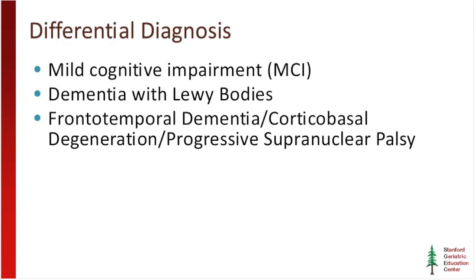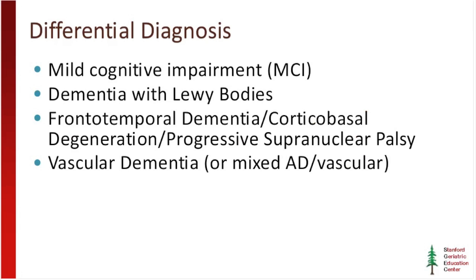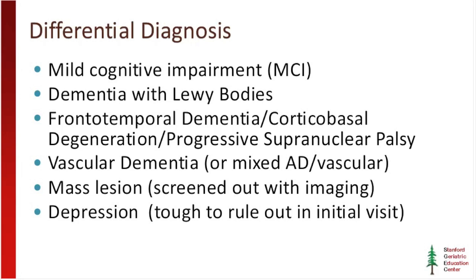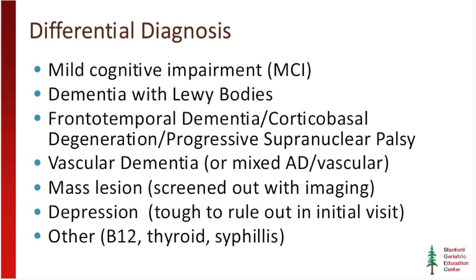Vascular dementia is usually clarified by MRI, though vascular disease can impact memory centers and look a lot like Alzheimer's disease; the clinical history — particularly the speed of onset, usually more sudden in vascular dementia — can help separate them. Mass lesions such as subdural hematomas or slow-growing tumors are picked up maybe once a year, which is one of the main reasons we continue to image everyone. Depression can be particularly tough to rule out on a first visit, often requiring one or two follow-up visits. Neuropsychological testing also screens for anxiety and depression. When we're wrong at autopsy, common alternative diagnoses are Lewy body disease and frontotemporal dementia.